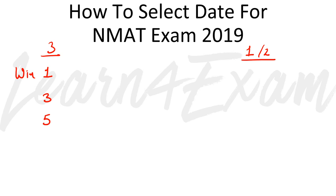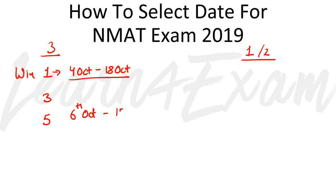If you look at Window 1, it starts from 4th October and goes till 18th October. The best dates within this window are simply between 6th October and 15th October — pick any one date in this range. I'll also tell you how to choose the specific date within this range.